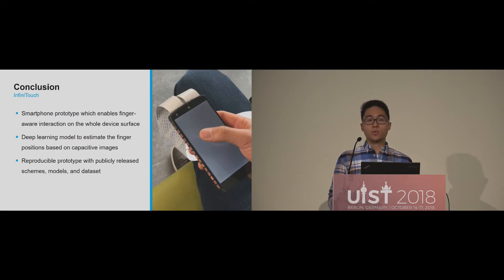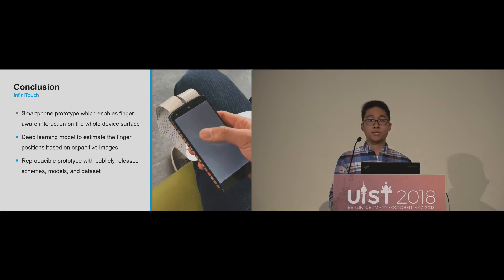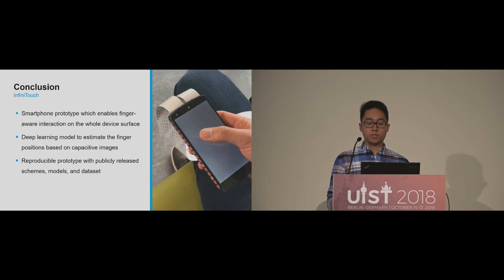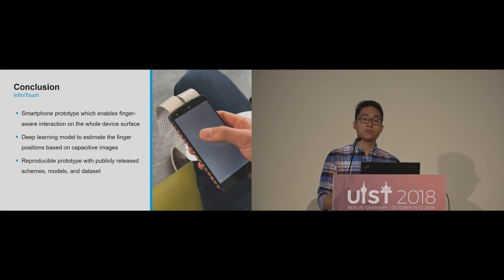To sum up, we presented InfiniTouch, a smartphone prototype which enables finger-aware interaction on the whole device surface. Our contribution consists of a fully touch-sensitive smartphone which runs Android and has the form factor of a standard smartphone. We trained a deep learning model which estimates the 3D finger position with a mean absolute error of 0.74 centimeters. We released the PCB schemes, source code, and our dataset on our project website. Future work could use our dataset — which contains marker positions of all 20 joints — to reconstruct the whole hand posture, enabling use cases such as transferring the whole hand into virtual reality or predicting actions based on hand kinematics.